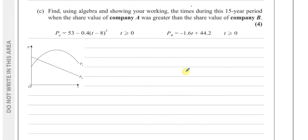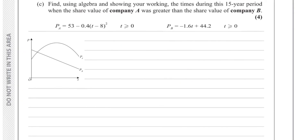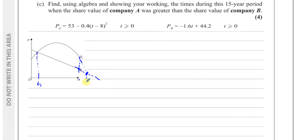Part C says: find, using algebra and showing your working, the times during this 15-year period when the share value of Company A was greater than the share value of Company B. Before the intersection point T1, Company A is less than B; after T1, it becomes greater. If they meet again at T2 within 15 years, we need to state both bounds; if T2 is beyond 15 years, we only state T > T1.